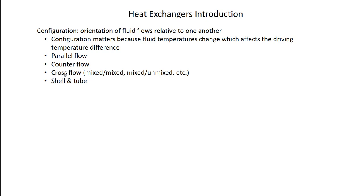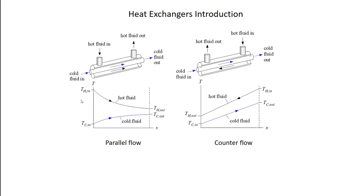Shell and tube is also pretty common. Let's start with the easiest ones: parallel flow and counter flow. A tube-in-tube heat exchanger is literally what it sounds like — you take a small tube and shove it inside a bigger tube. You have a place for fluid to flow in the small tube, and another place for fluid to flow in the annular space between the small tube and the big tube. Depending on how you plumb this, you can have either a parallel flow or a counter flow heat exchanger.